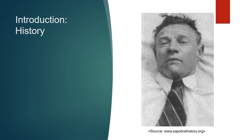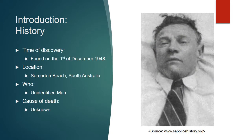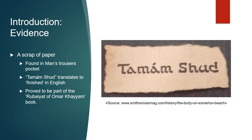The introduction: the Somerton Man was found on the 1st of December 1948 at Somerton Beach, South Australia. He is to this day unidentified and his cause of death is still unknown. There was a scrap of paper found in his trousers that reads 'Tamam Shud,' translated to 'finished' in English.